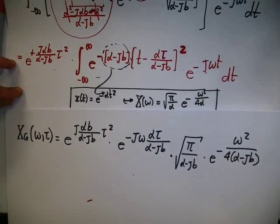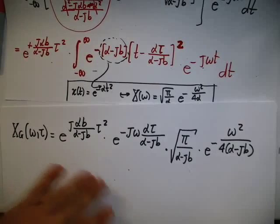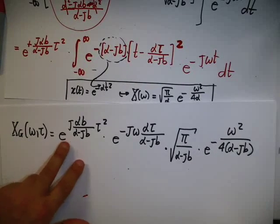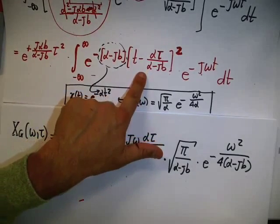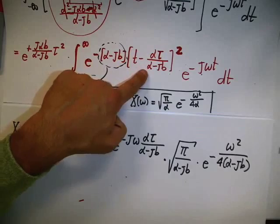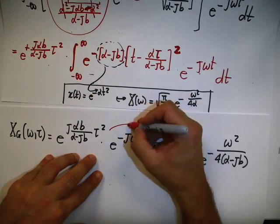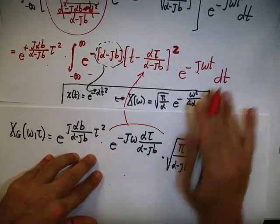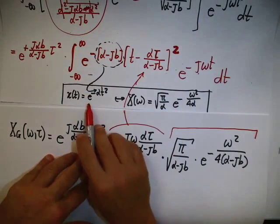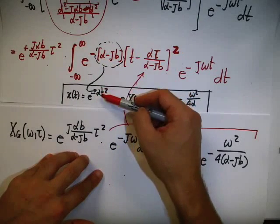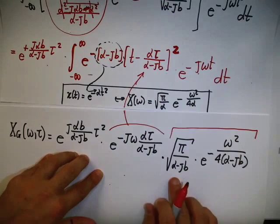We just have to simplify this expression. This term comes from the tau-squared exponential, this term comes from the Gaussian, and here I apply the Fourier transform result. This is a signal shifted by alpha*tau / (alpha minus j*b), which gives the extra phase term. This shift term comes from the time shift property, and the remaining part is the Fourier transform of the exponential.